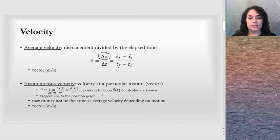The instantaneous velocity - if you know the position function as a function of time in calculus, you could figure out the derivative of the position function and that would give you the velocity. It is the tangent line to the position graph and we're going to keep that in mind as we move forward towards kinematics.